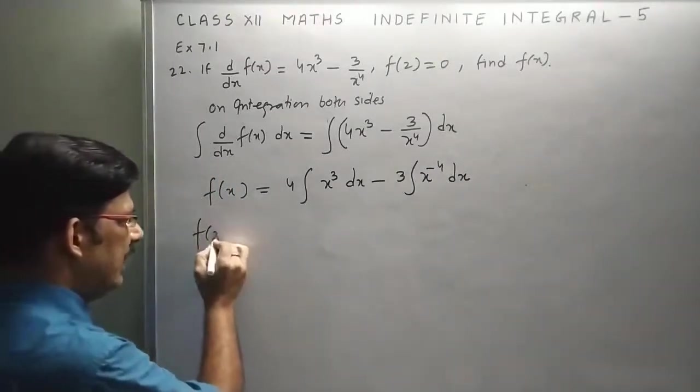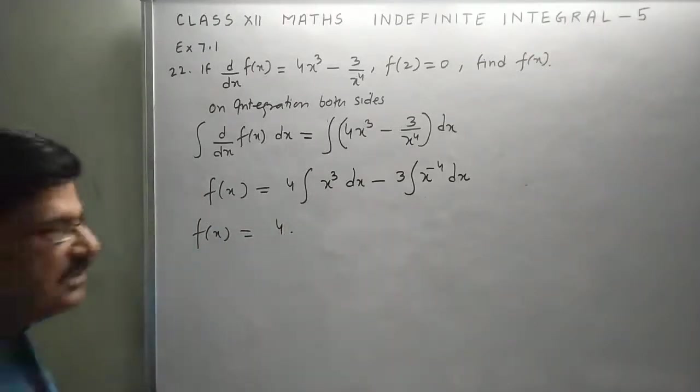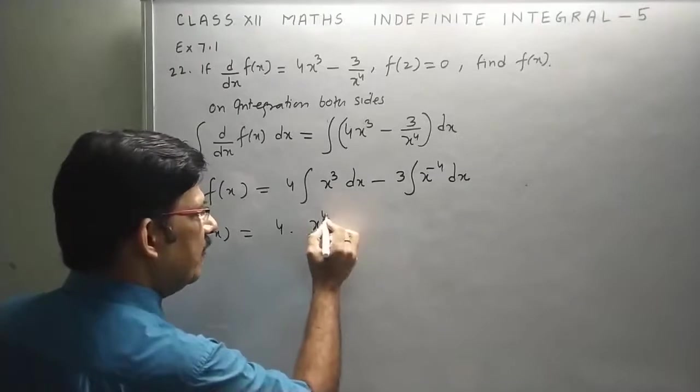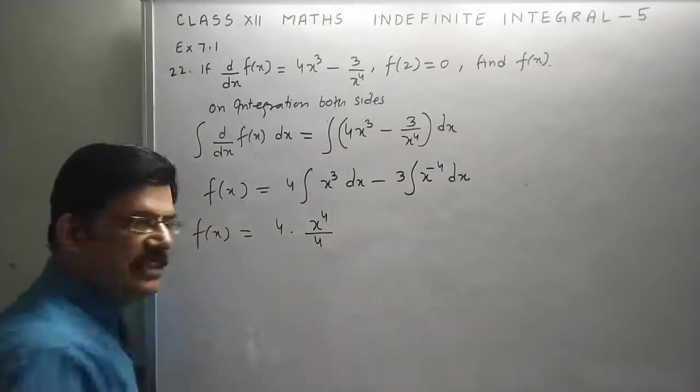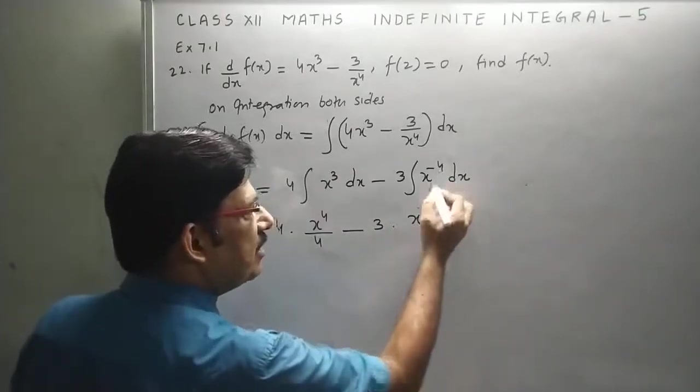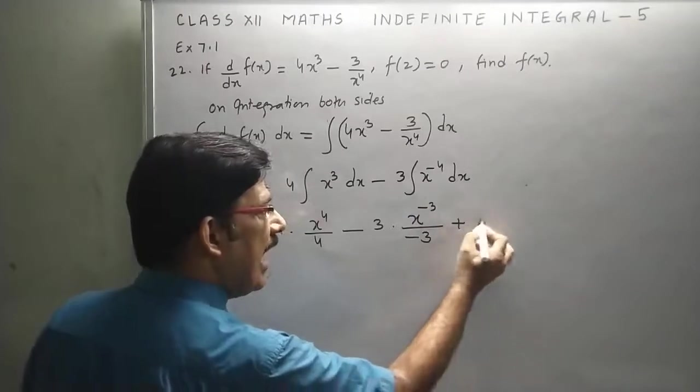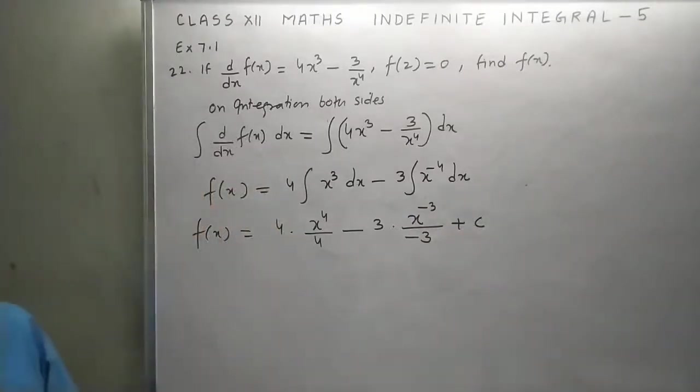Now, left hand side, f(x) is there. For 4x³, just add 1 to the power and divide by the new power. Minus 3x⁻⁴, add 1 to the power and divide by the new power and a constant of integration c is must.